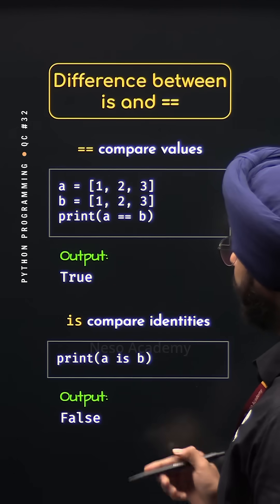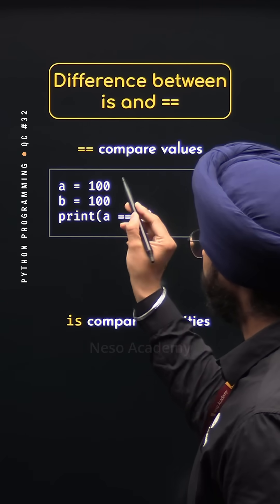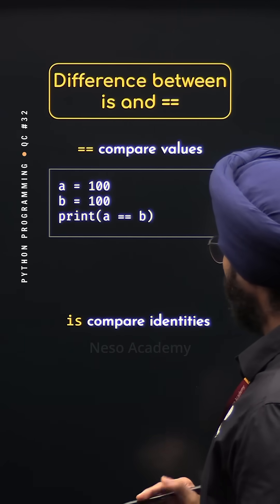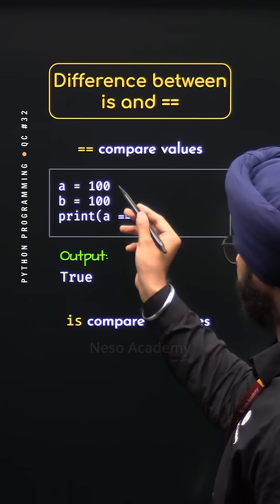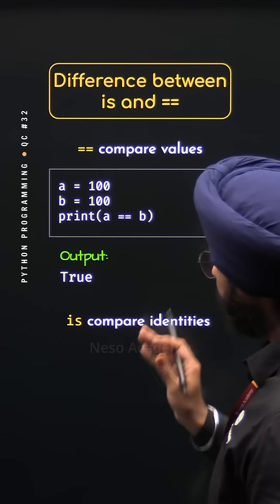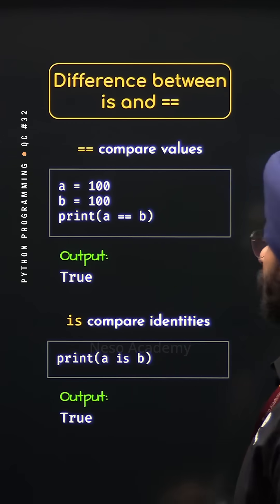Now, what happens if we try to assign integers to these variables? Like in this case, I have assigned 100 to these two variables. What happens in case of the equality operator? We will get true as the result because values are same. But what happens in case of the is operator? We will get true in this case also.